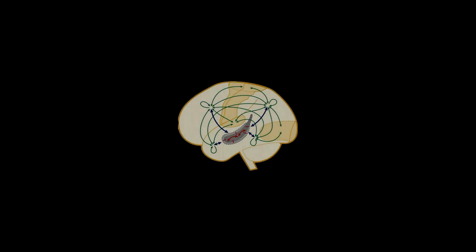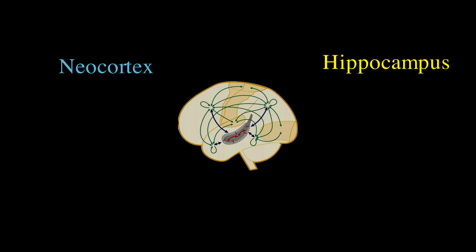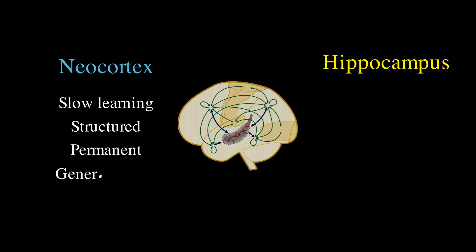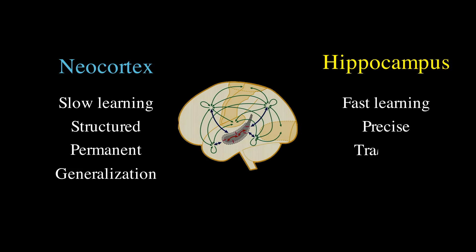One possible explanation for this ability is the existence of complementary learning systems in the brain. The first learning system, neocortex, acquires structured information slowly but retains it for a long time, aiding generalization. The second learning system, hippocampus, acquires new information rapidly but stores it for a short period of time.